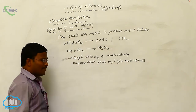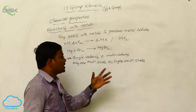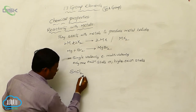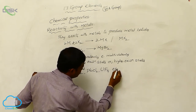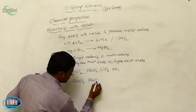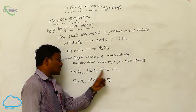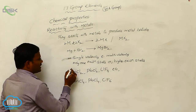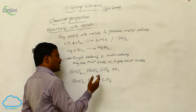Sometimes metals in their lower or higher oxidation states react with halogens to produce different types of metal halides — like SnCl₂, PbCl₂, UF₄ in lower oxidation states, and SnCl₄, PbCl₄, UF₆ in higher oxidation states. So metals may have only one or multiple oxidation states.